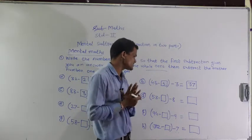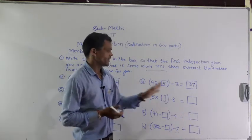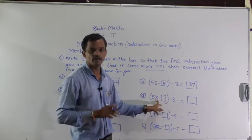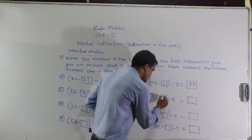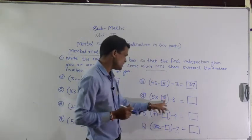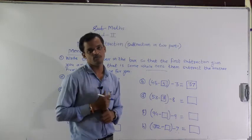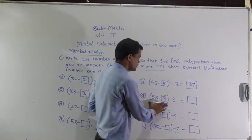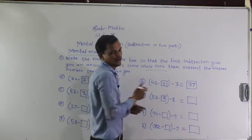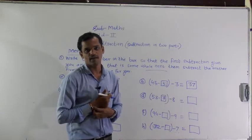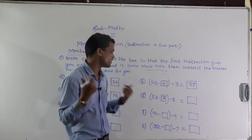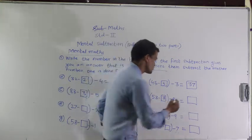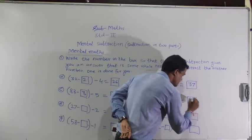Just do the calculation in your mind and write the answer. 53 minus blank minus 8. Which number should be subtracted from 53 so you get the whole ten? That is 3. Now 50 minus 8 — do the calculation in your mind. The answer is 42.